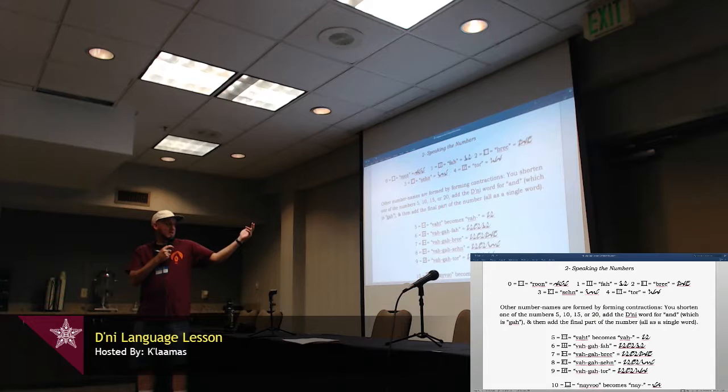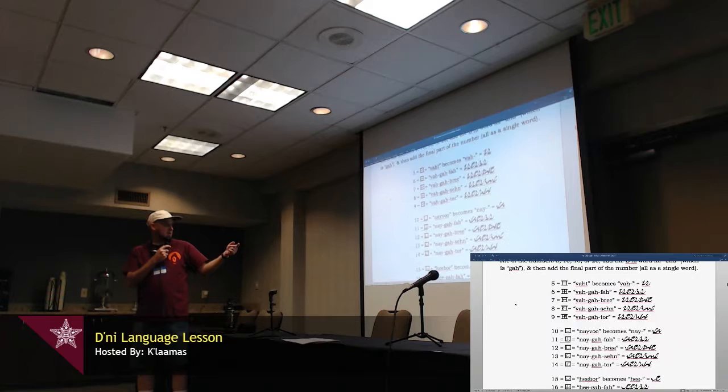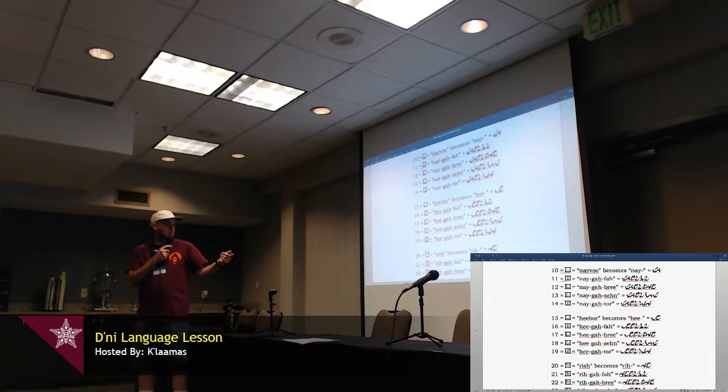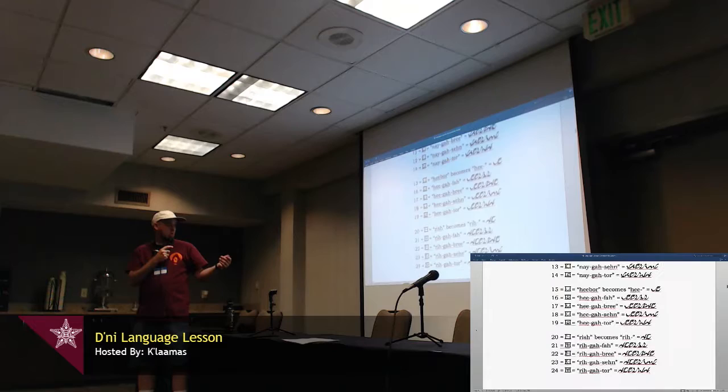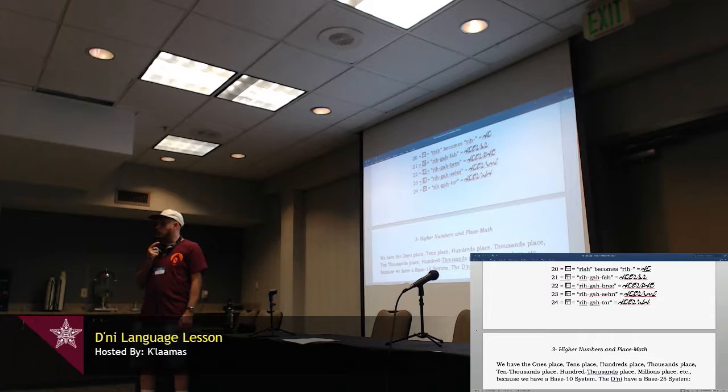And same with 10 through 14, Nevu becomes Ne, Ne Ga Fa, Ne Ga Bree, Ne Ga Sen, Ga Tor. 15 through 20, He Bor, He Ga Fa, He Ga Bree, He Ga Sen, Ga Tor. 20 through 24, Rish, Riga Fa, Riga Bree, Riga Sen, Ga Tor. So you just abbreviate 1 through 4 and add on the rest.